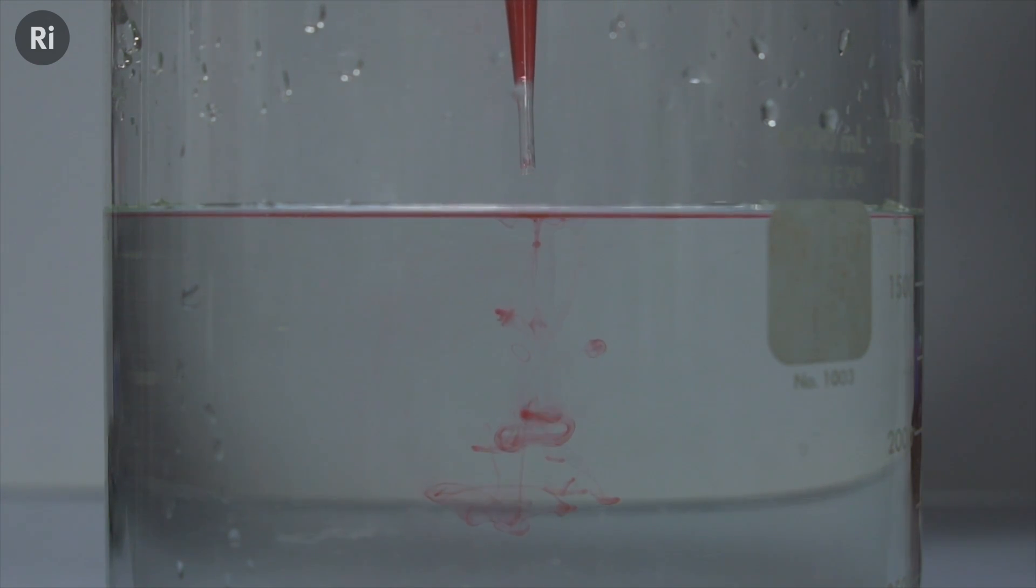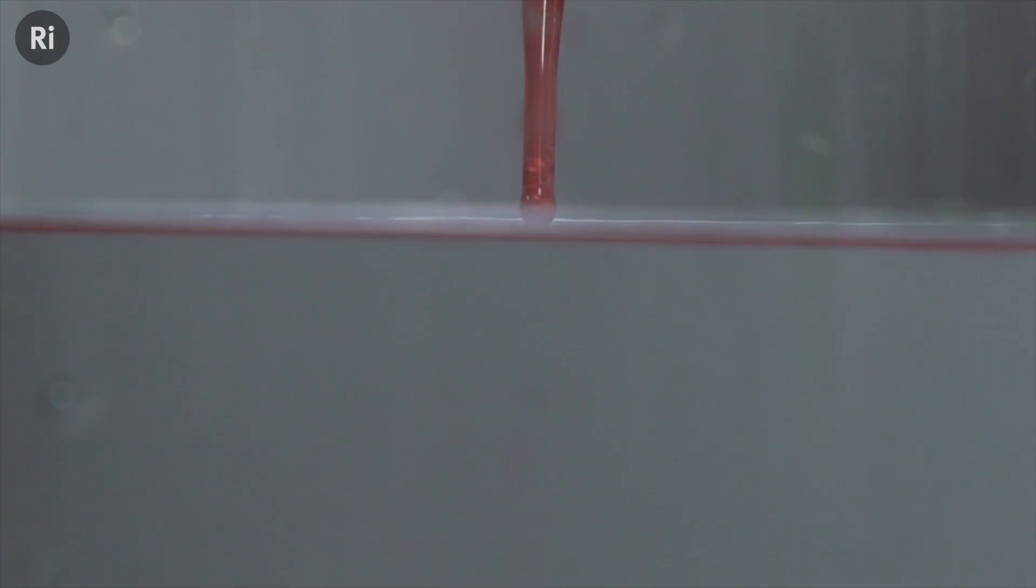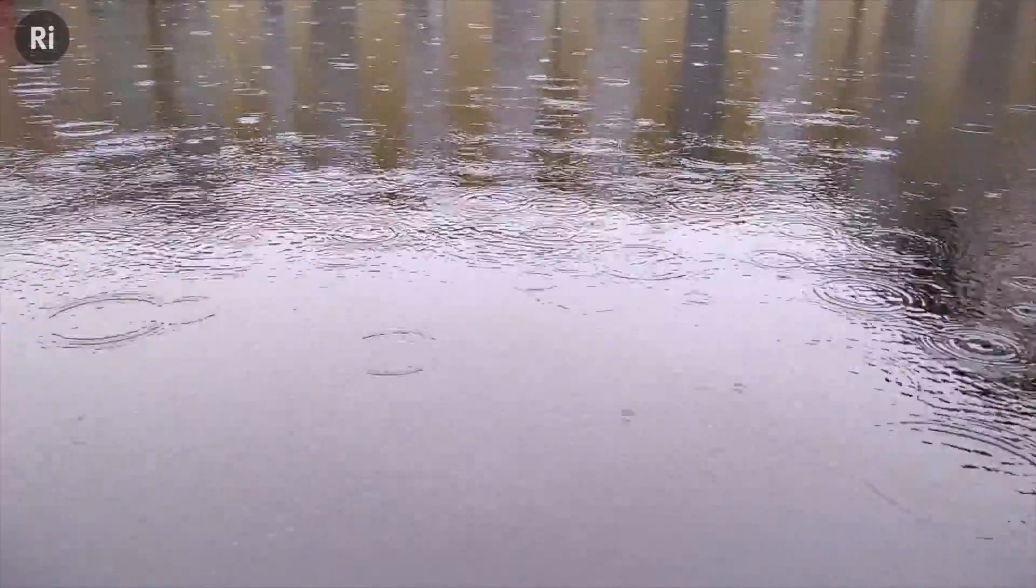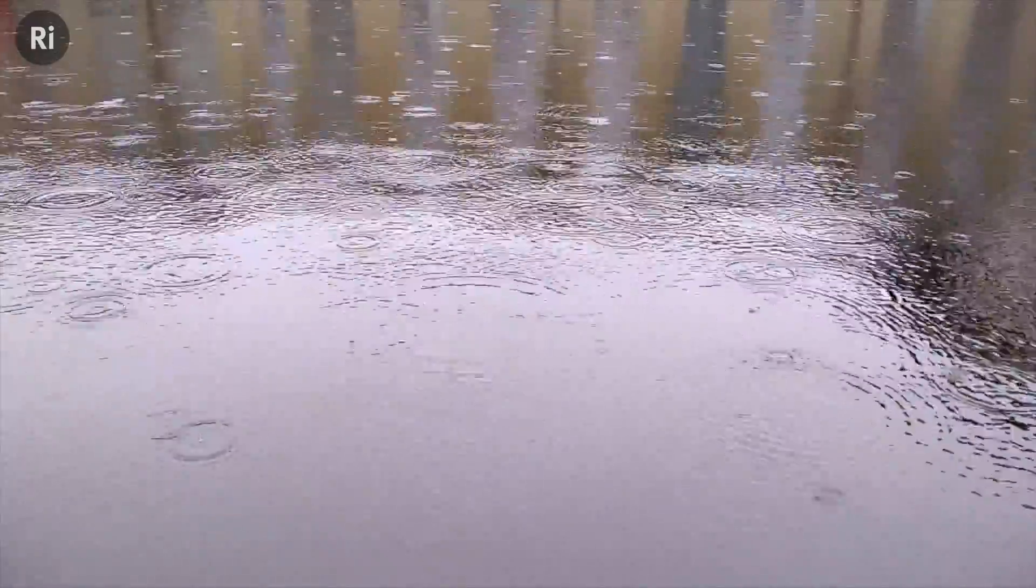A vortex ring also forms when a small mass of liquid moves through a larger body of still liquid. The friction at the interface between the two fluids causes the vortex ring to form. Think about raindrops falling on a lake. Under each one a vortex ring is actually forming. It's just normally we can't see it.